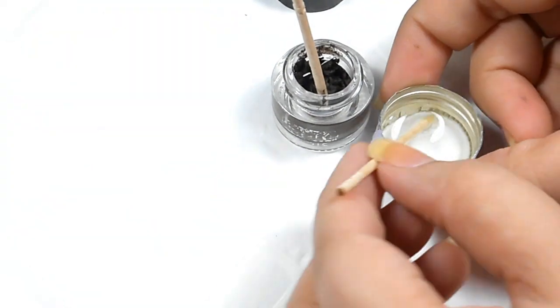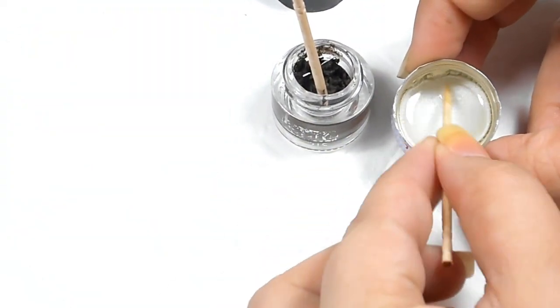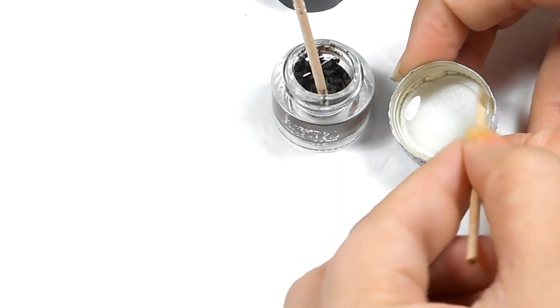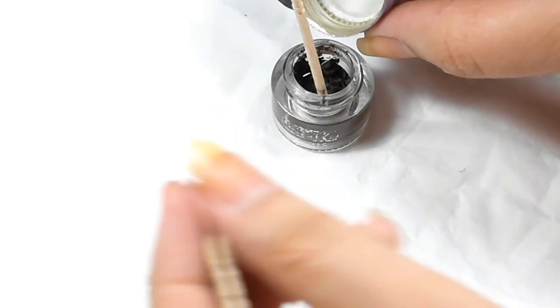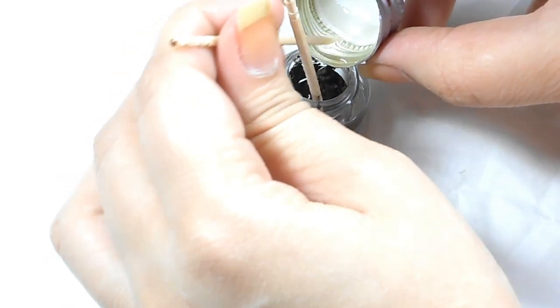Over here in this cap, I have equal amount of glycerin and water. Do not use tap water. I would suggest you to use drinking water, maybe like mineral water, and just add this mixture little by little into your gel eyeliner.